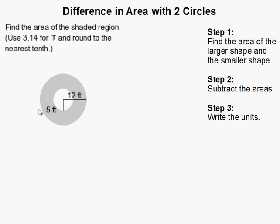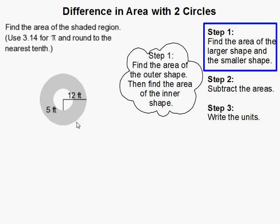How to find the area of a circle when we have another circle inside of it that we don't want. Basically, what we need to do is find the area of this outer shape and then subtract the area of this smaller one.